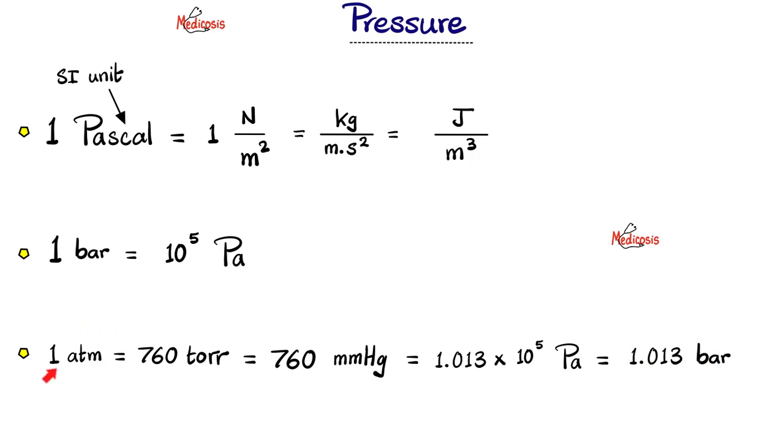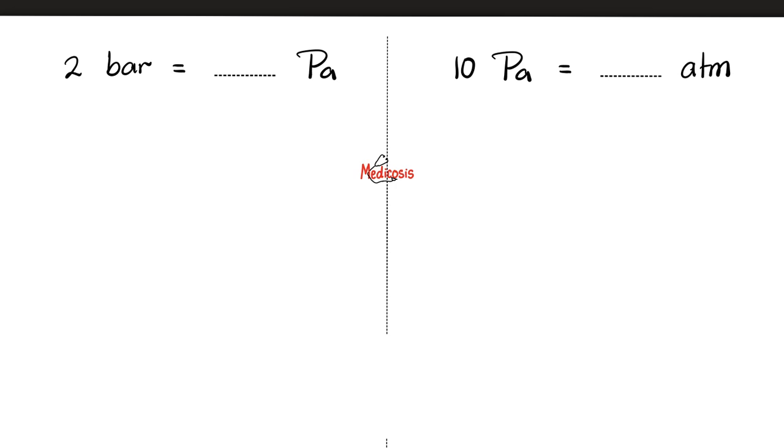Basically, the atm is very close to the bar. The torr is equivalent to the millimeters of mercury. Let's do this, people. Let's convert from bar to Pascal. You start with what you have, which is 2 bar, and then create your conversion factor ratio. The bar is greater than Pascal. Greater by how much? It is 100,000 Pascals. And then you cancel the bar with the bar, and you end up with 2 multiplied by 10 power 5 Pascals.